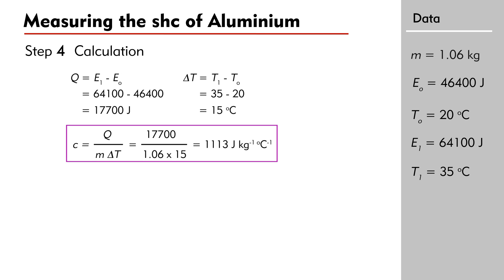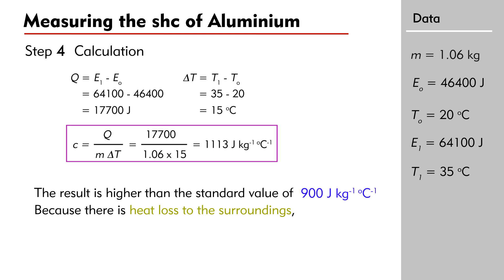Note that the result is higher than the standard value of 900 J/(kg·°C). This is acceptable because there is heat loss to the surroundings and energy is needed to raise the temperature of the apparatus such as the heater itself and the thermometer.